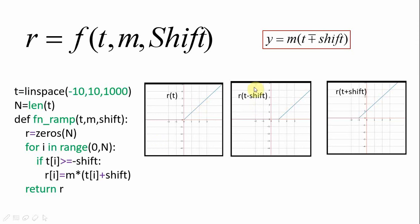With positive shift we get these two shifted ramps. With negative shift it shifts to the right, with positive sign it shifts to the left.